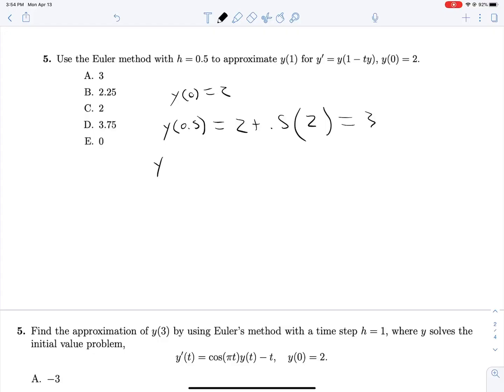So we are approximating y at 1, so this is our last step. y at 1 is equal to 3 plus 0.5 times, 0.5 times what? y, which is 3 times 1 minus 0.5 times 3. 1 minus 0.5 times 3,